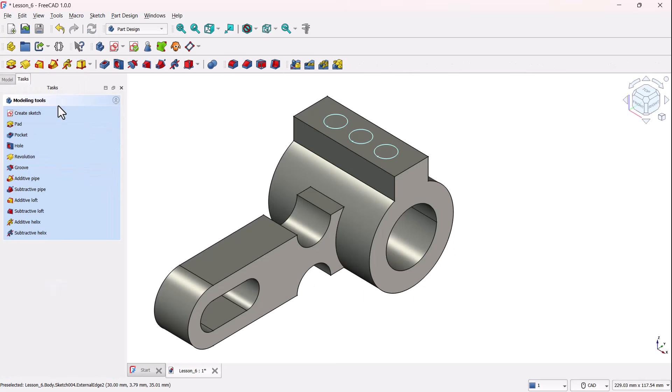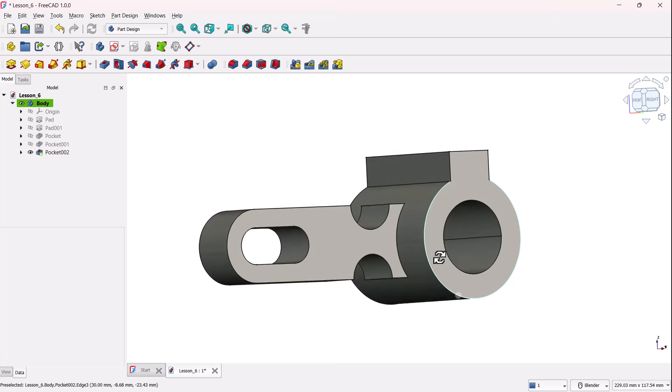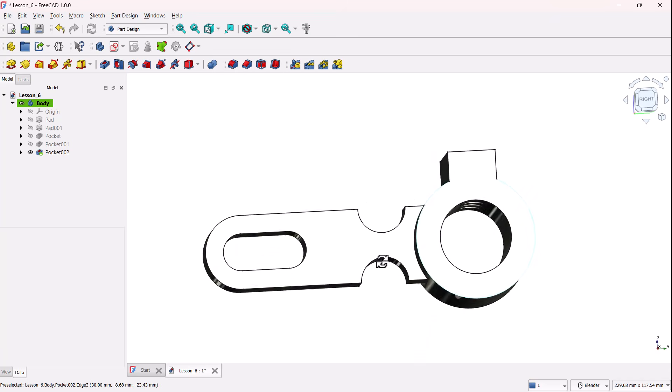Close the sketch, head back to the part design workbench and select the pocket tool. Change the length to 35 millimeters. This ensures the holes cut deep enough.